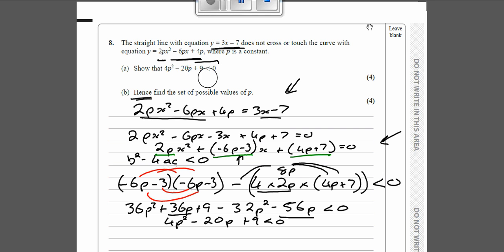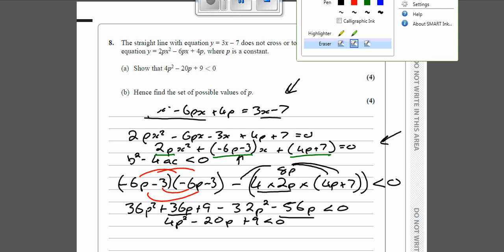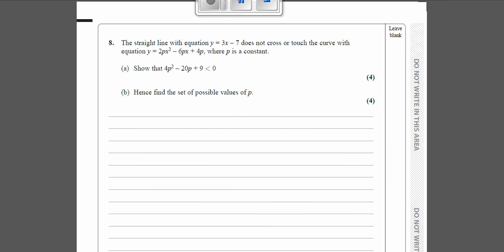So what we've got here is we've got an inequality because it's less than 0, and it's got a p² there, so it's a quadratic inequality. Now whenever you have a quadratic inequality, we always draw the diagram. So we're going to try and factorize that and then we're going to sketch it.